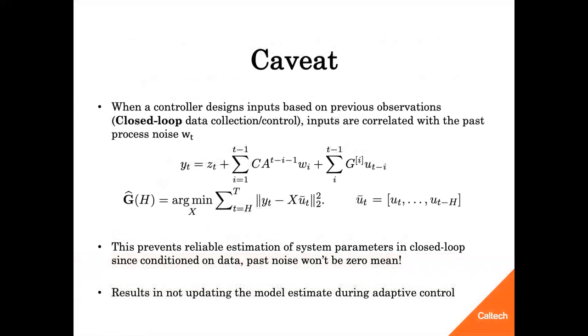However, this estimation method has a caveat. When a controller designs inputs based on the previous observations, in other words, when the data is collected with a closed-loop controller, the inputs become correlated with past noise sequences. Thus, this estimation method does not give reliable estimates of the underlying system, since conditioned on the data, the noise process won't be zero mean anymore. Therefore, all the prior works use the data gathered using open-loop controller to estimate the system dynamics, commit to a controller using this estimate, and do not update the model estimate while controlling the system.